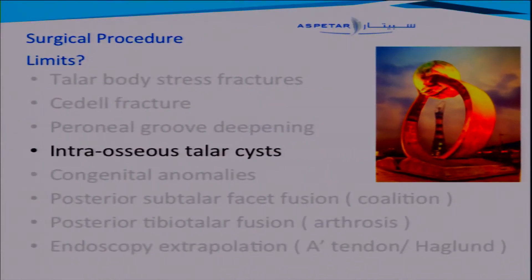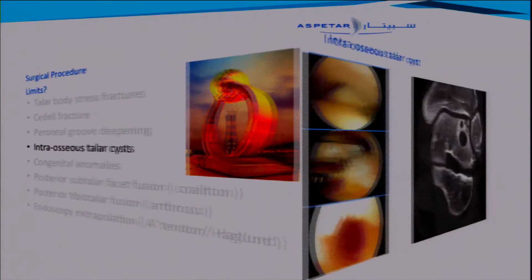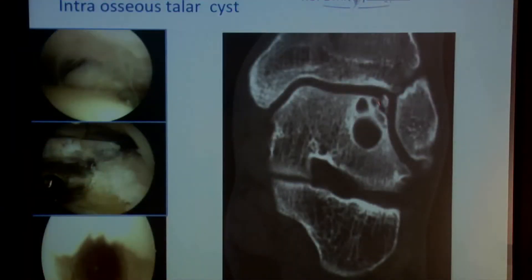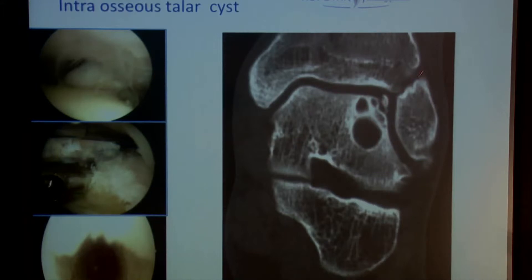What about intraosseous talar cysts? Looking at this picture, we have a talar dome lesion on the lateral tibiotalar region of the ankle, with cysts coming into the subchondral bone but some bone stock still remaining. To treat this, you would normally have to do an oblique osteotomy and clean the whole area.